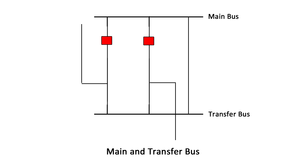Then the circuit breaker to be maintained is opened and isolated on both sides. Circuit protection will be disabled in this maintenance arrangement. When a tie circuit breaker is present, circuit breaker maintenance is achieved by closing the tie breaker.